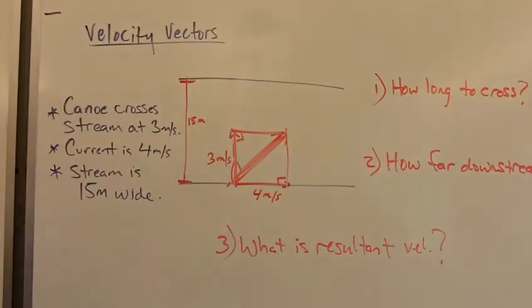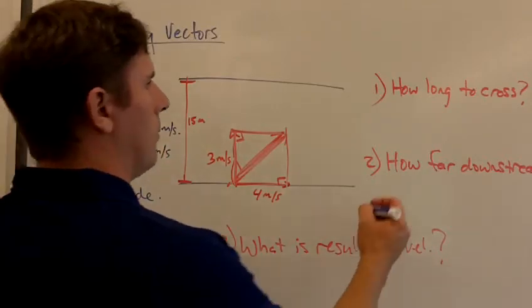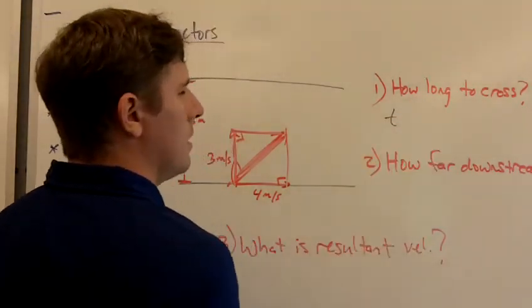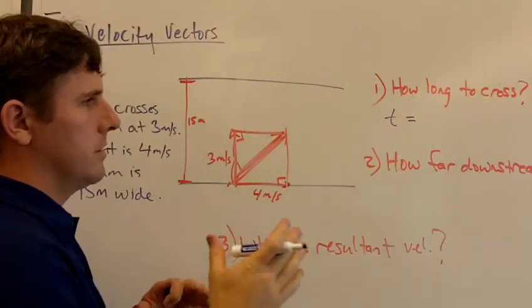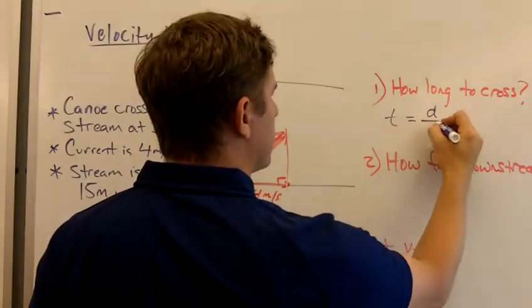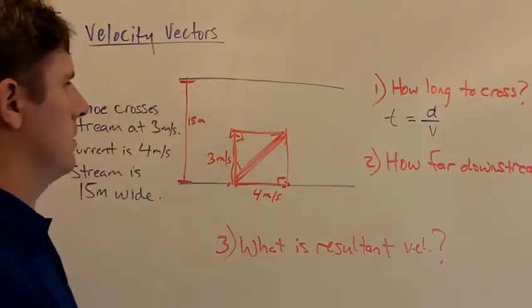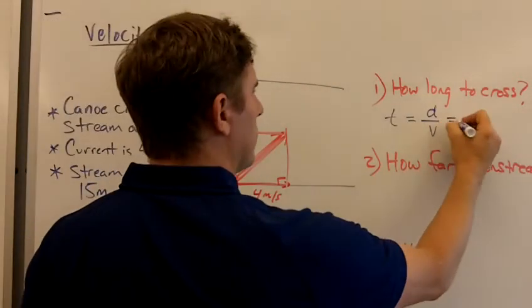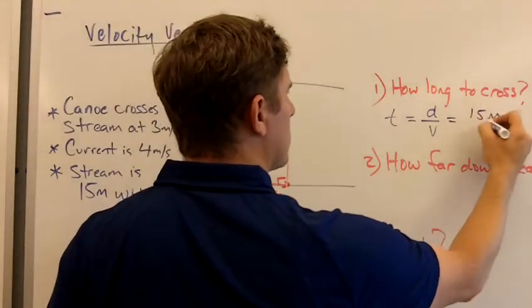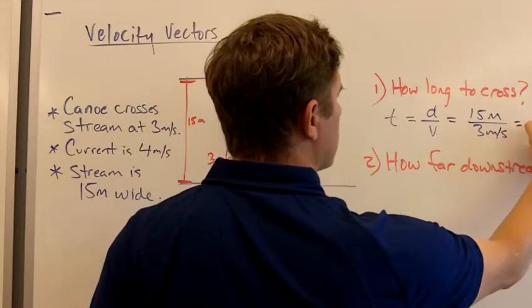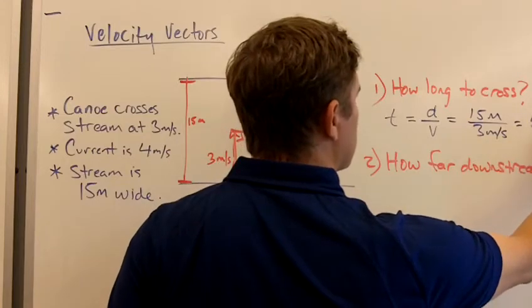Okay. So first, how long is it going to take to cross the stream? Well, let's see. Three meters per second is how fast this thing's going across. And what distance does it have to cover? 15 meters. So if we want to know how long we're trying to solve for t, and we're just going to rearrange our equation velocity equals distance over time to be time equals distance divided by velocity. Here's the distance, 15 meters. Here's the vertical velocity, three meters per second. So how long does it take? Five seconds.